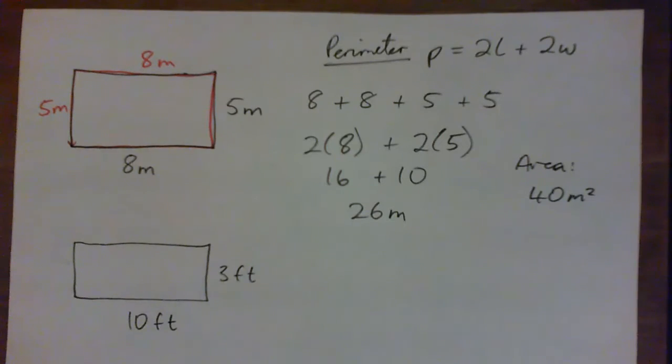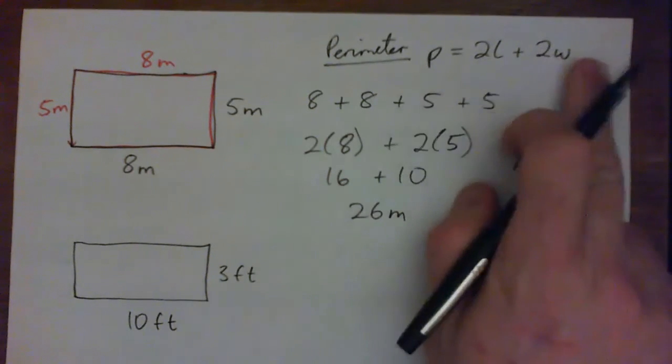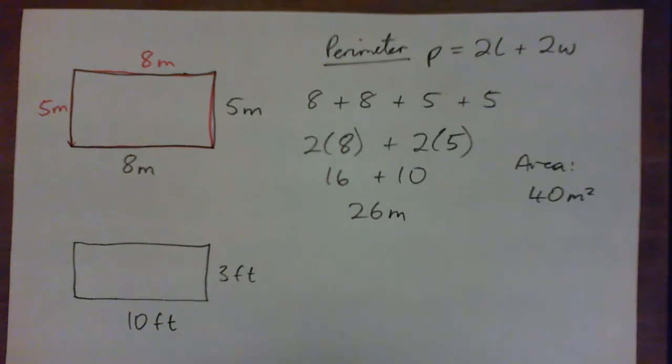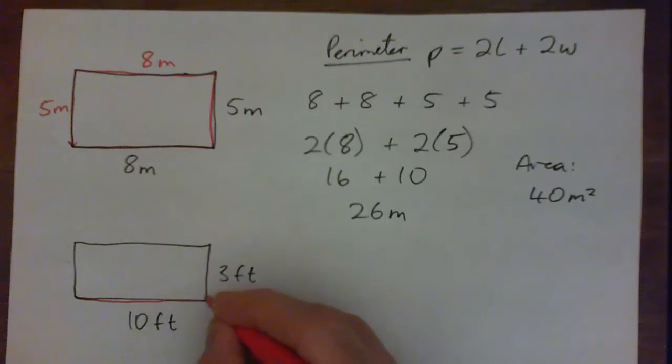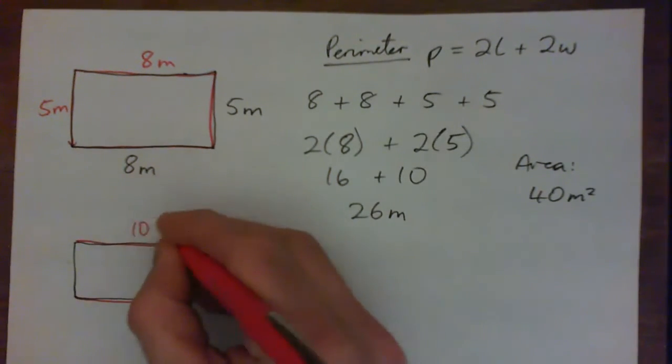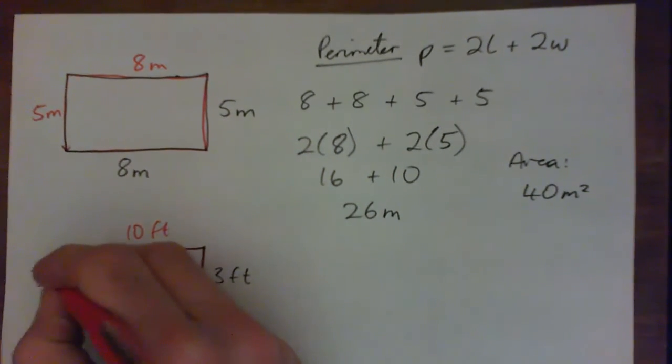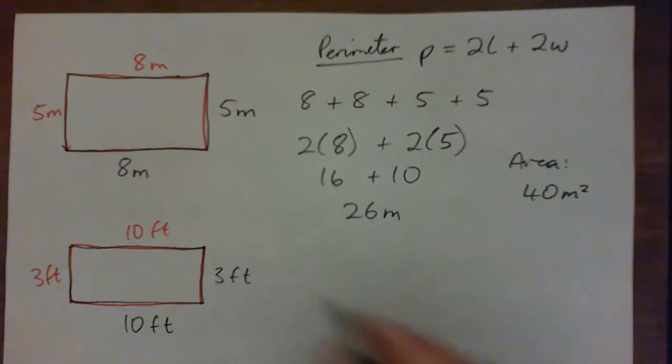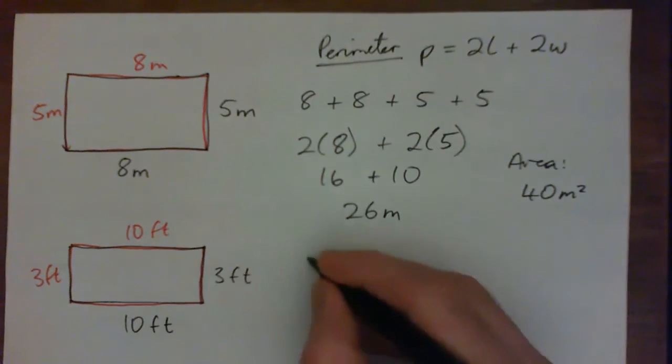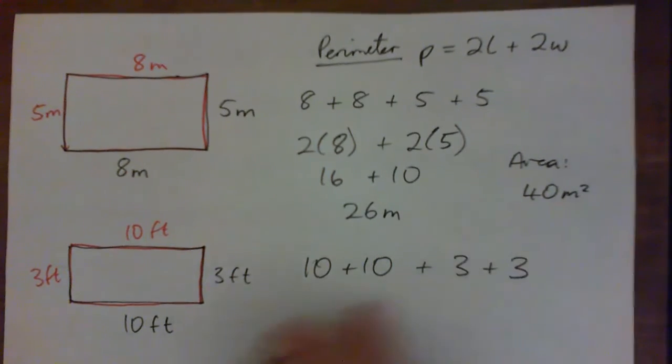The perimeter of this rectangle, again, is 4 sides. And the perimeter is 2 times the length plus 2 times the width. So it's this length, 10 feet, plus this width of 3 feet, plus 10 feet, plus 3 feet. So it's 10 plus 10 plus 3 plus 3. 2 lengths and 2 widths.